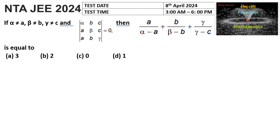If alpha is not equal to a, beta is not equal to b, and gamma is not equal to c, and the determinant of the matrix with rows (alpha, b, c), (a, beta, c), (a, b, gamma) is equal to zero, then find the value of a/(alpha - a) + b/(beta - b) + gamma/(gamma - c).